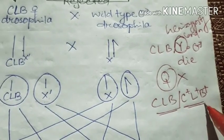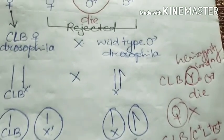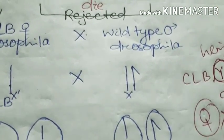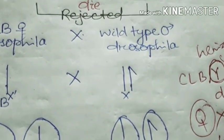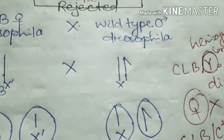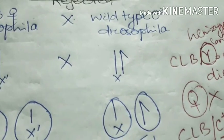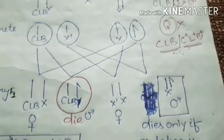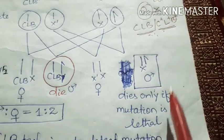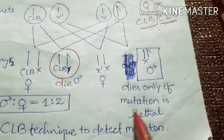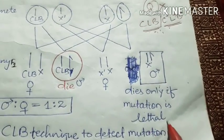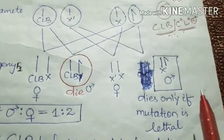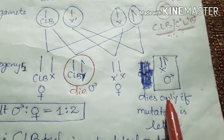Females don't die because the chromosome can be maintained in heterozygous condition. These chromosomes are maintained in heterozygous. The female doesn't die, only males die. The male dies only if the mutation is lethal.